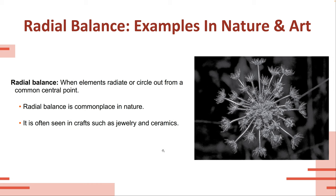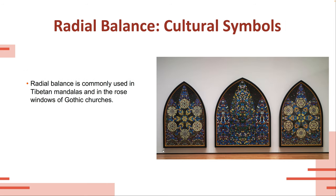There are a lot of aspects of nature reflected in crafts like jewelry and ceramics. Radial balance is really common in cultural symbols — in Tibetan mandalas, in rose windows of Gothic churches. Here are some mosaics arranged in a triad. On the left and right, there's a central radius and all the design elements radiate off of it in a balanced way. In the right one, the elements balance off a radial point to create a radially balanced piece.